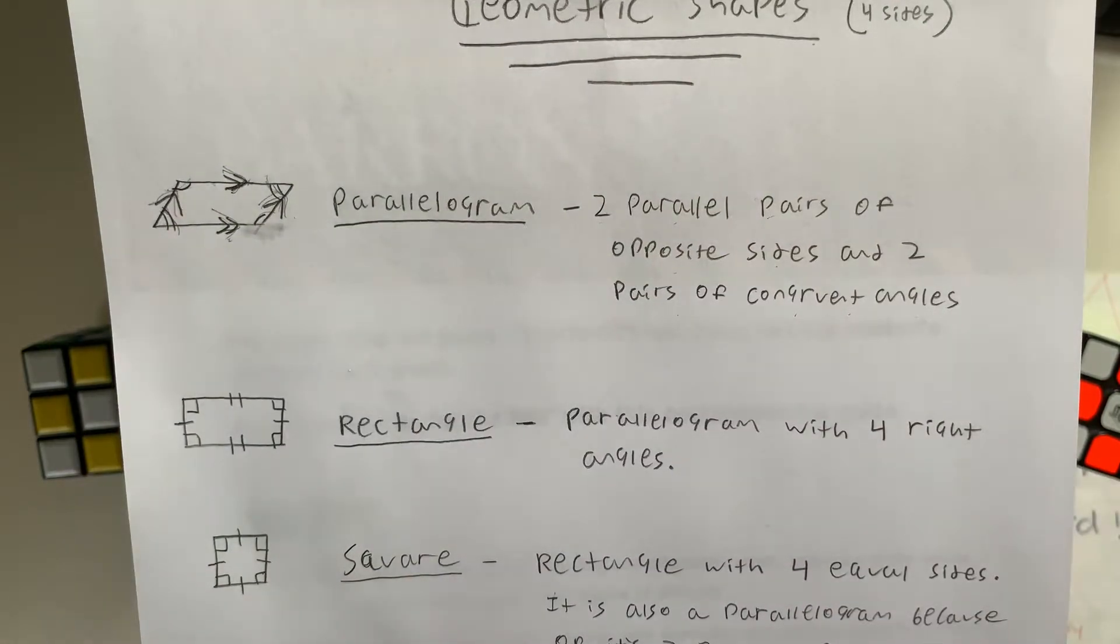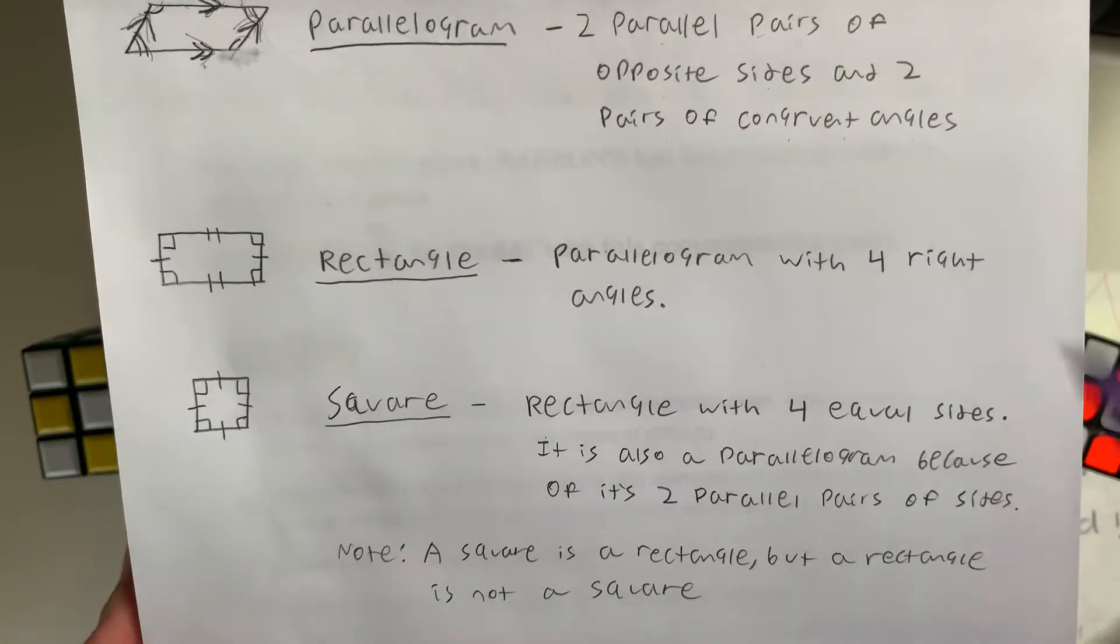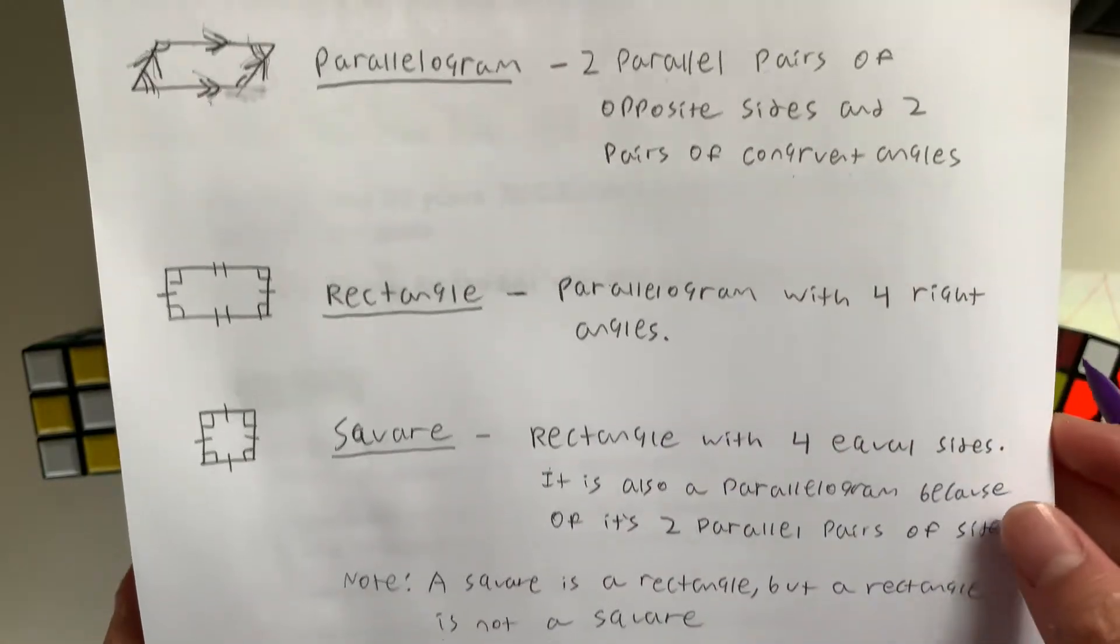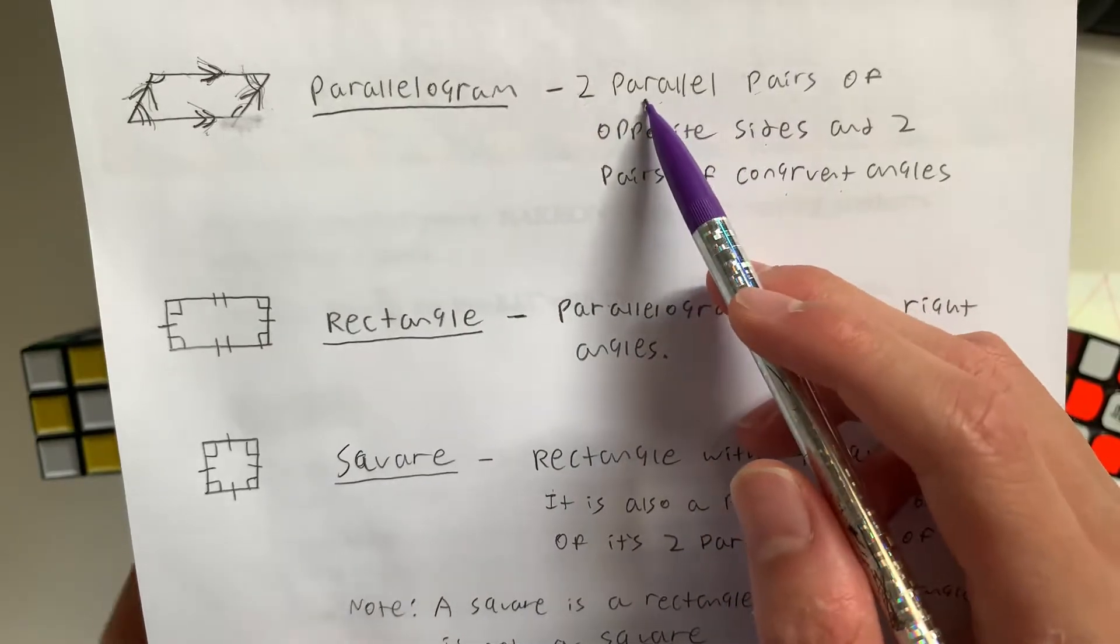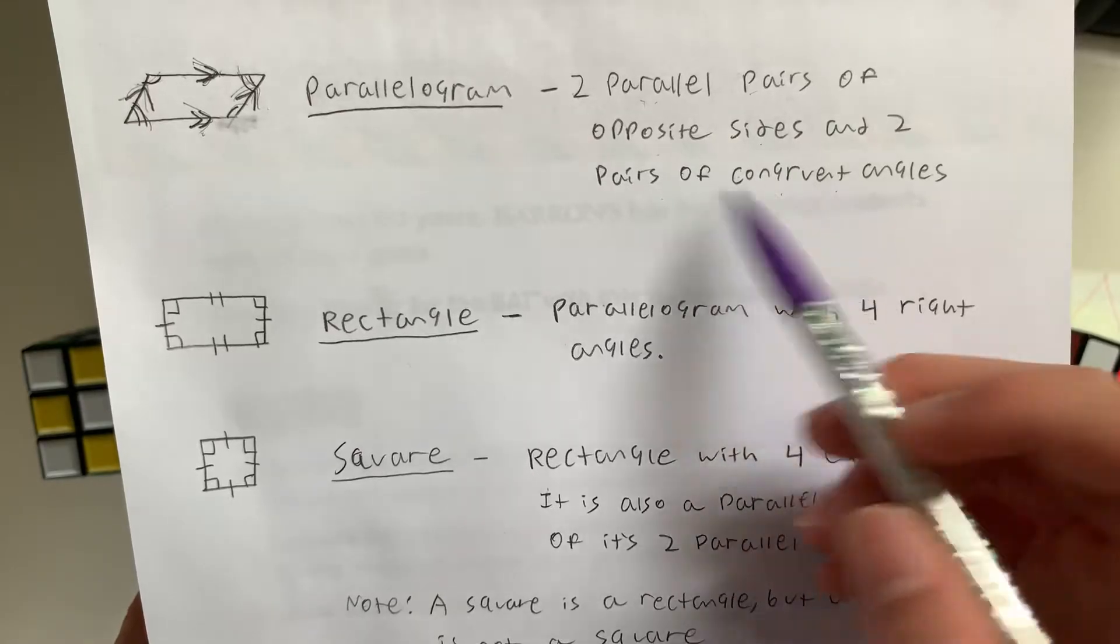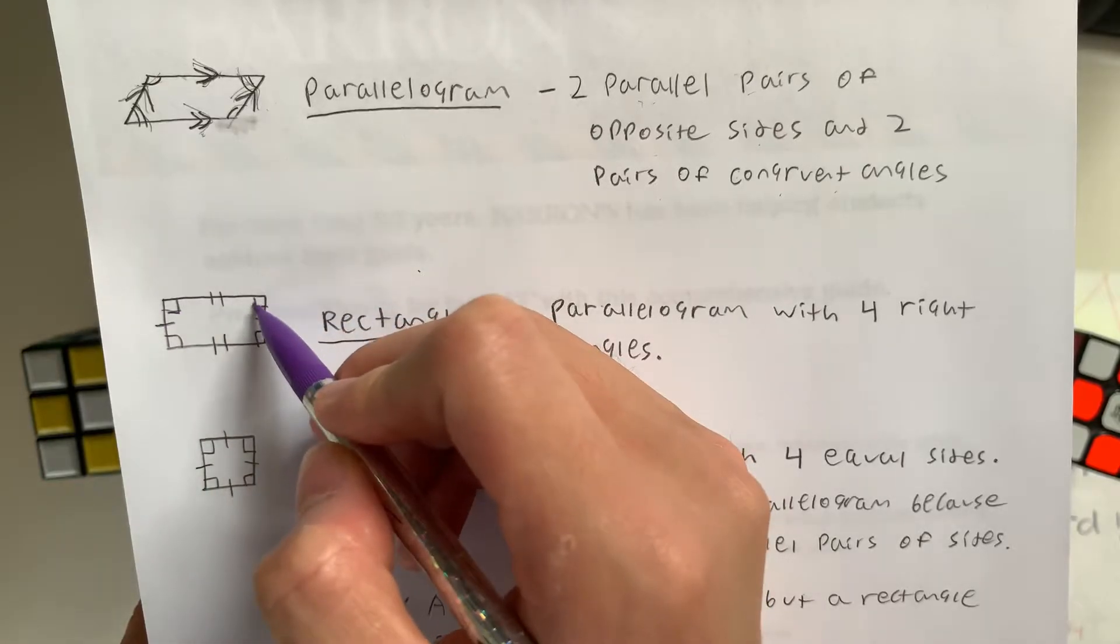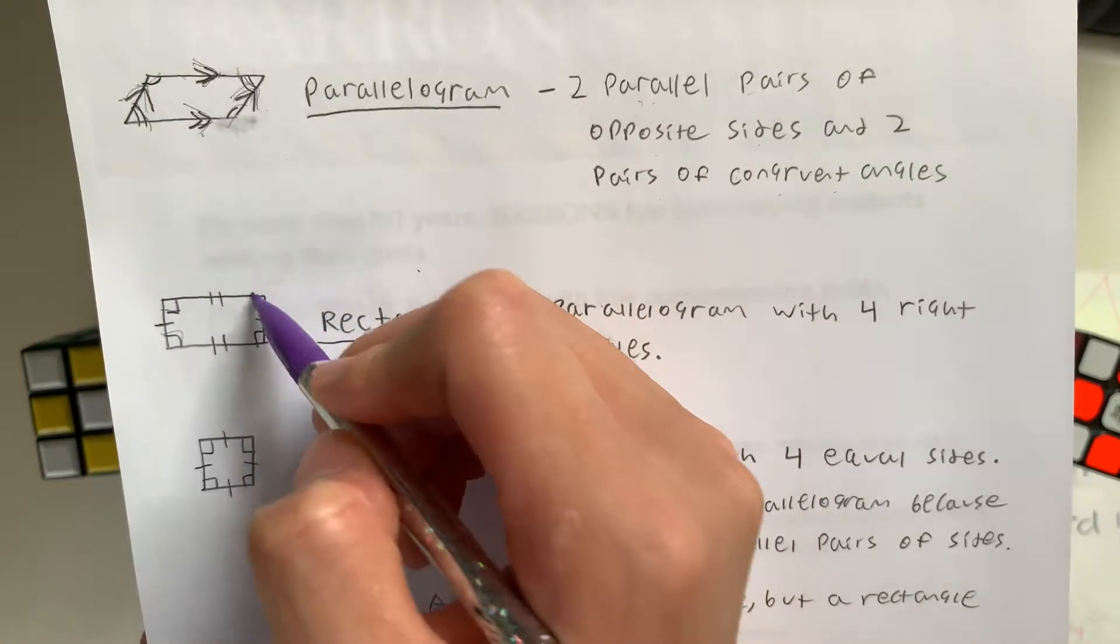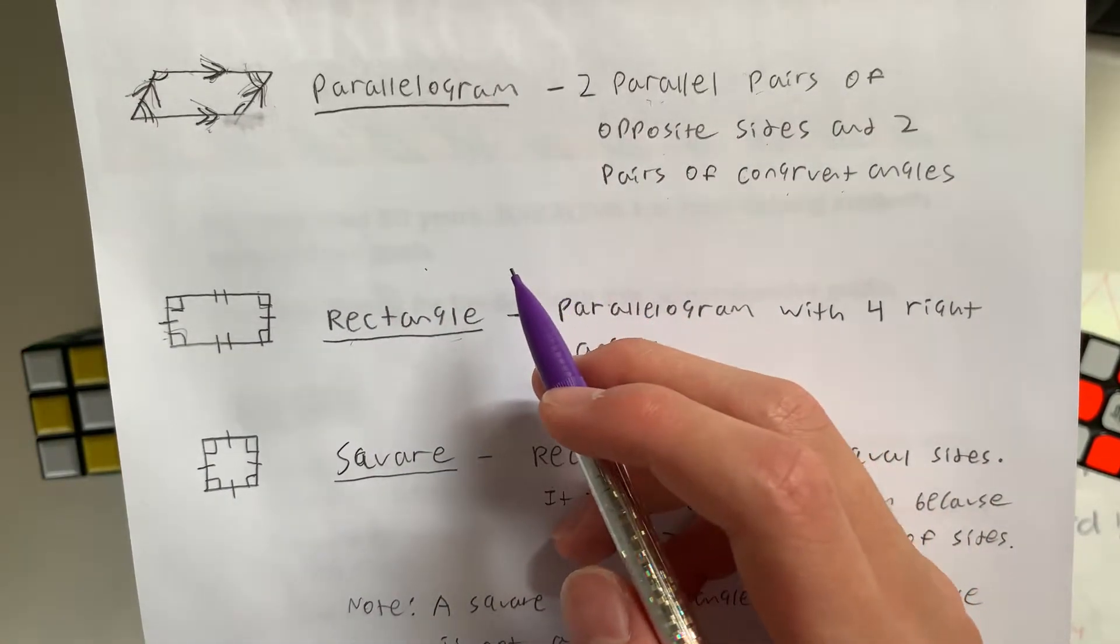The next quadrilateral is the rectangle. A rectangle is basically a parallelogram with four right angles. It has the same characteristics as a parallelogram: two parallel pairs of opposite sides and two pairs of congruent angles, as well as having four right angles. The four angles are the same because they're all 90 degrees. That's what a rectangle is.